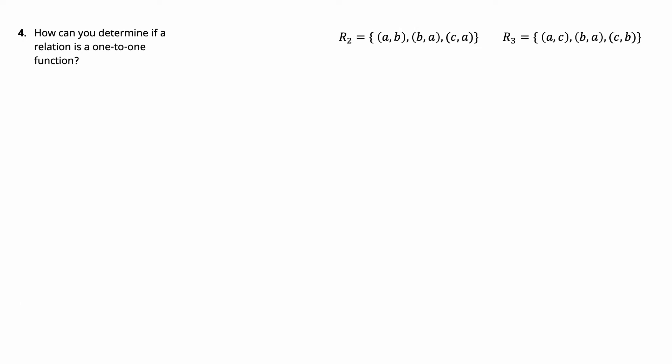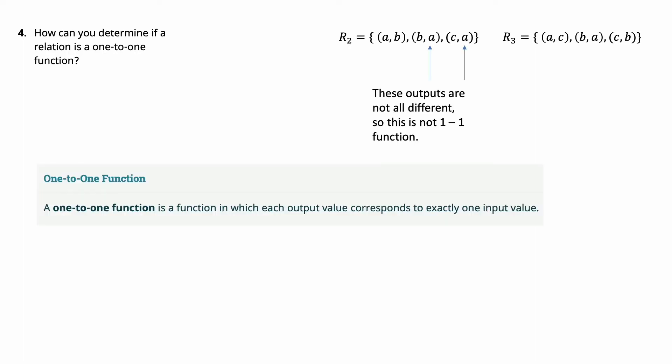Now how can I tell if a relation is a one-to-one function? Well first of all it has to be a function so we eliminate the one that's not. And now what I know is that all the outputs have to be different. So if I have two outputs the same then I know it can't be a one-to-one function.